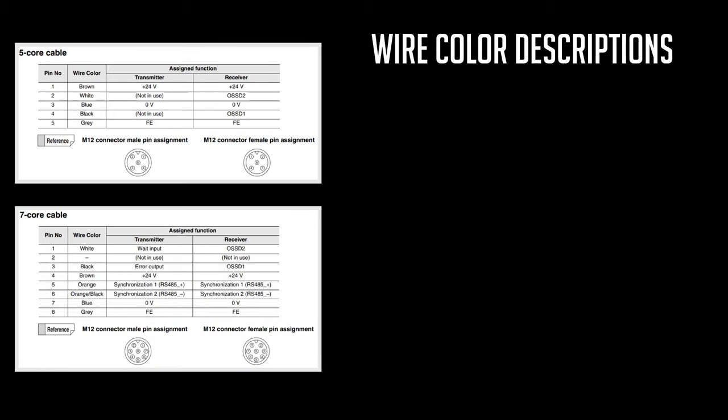With the 7-core cables, you have wire synchronization so that you can see alignment indicators up and down the transmitter and receiver, as well as other things like error outputs.